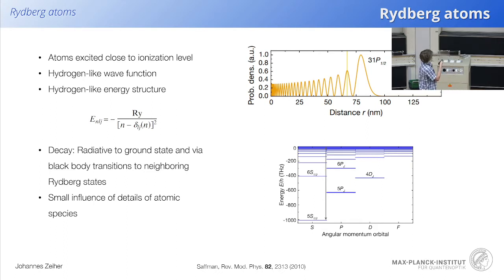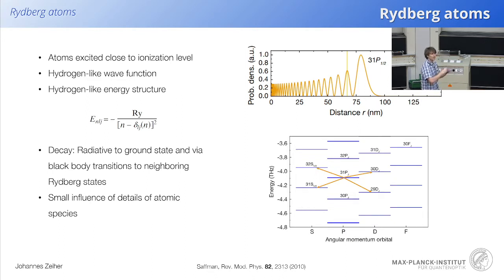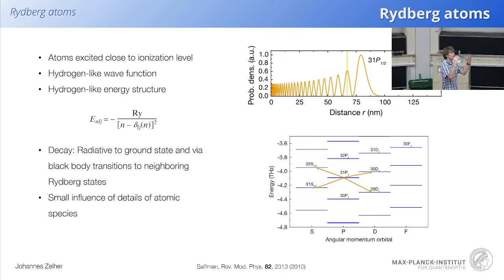The wave functions also look a lot like hydrogen. For example, at 31P the size of these Rydberg atoms is quite substantial — the ground state is about an angstrom, while Rydberg atoms are many times larger. They have two decay paths: direct radiative decay back to the ground state, or decay to neighboring Rydberg states stimulated by black body radiation, with transitions in the megahertz regime.